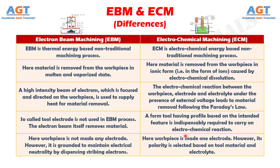Number 5: In electron beam machining, the workpiece is not made any electrode. However, it is grounded to maintain electrical neutrality by dispensing striking electrons, whereas in electrochemical machining, the workpiece is made one electrode. However, its polarity is selected based on tool material and electrolyte.